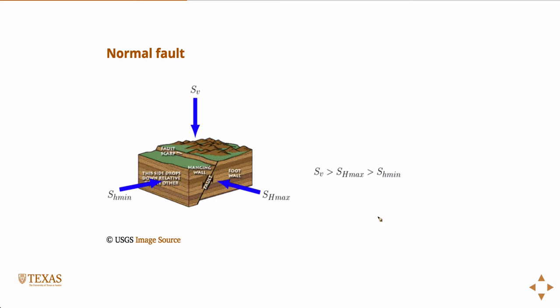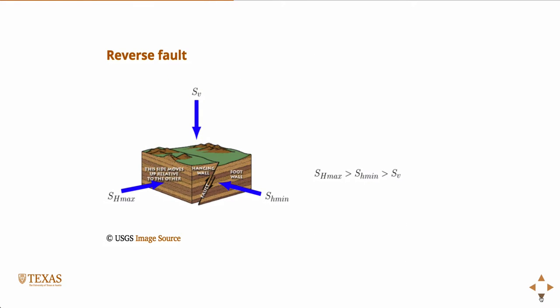So then the reverse faulting is just the opposite. So in a reverse faulting regime, the vertical stress is the minimum. The reverse faulting regime, the hanging wall moves up relative to the foot wall. And so in this case, the vertical stress needs to be small compared to the other two to accommodate that motion.